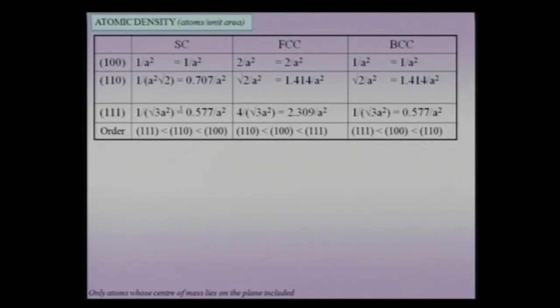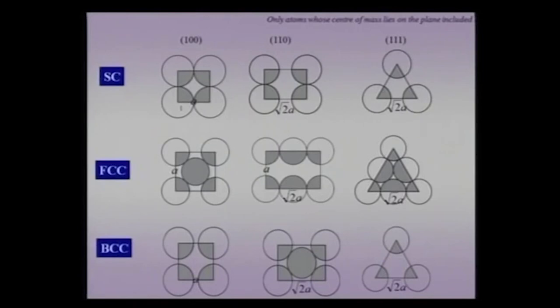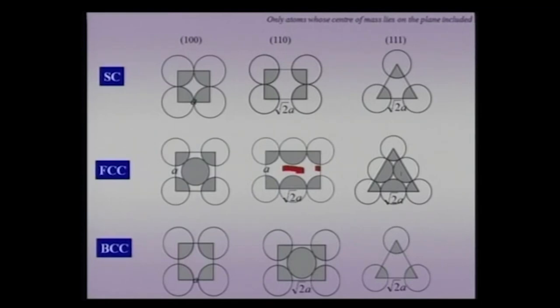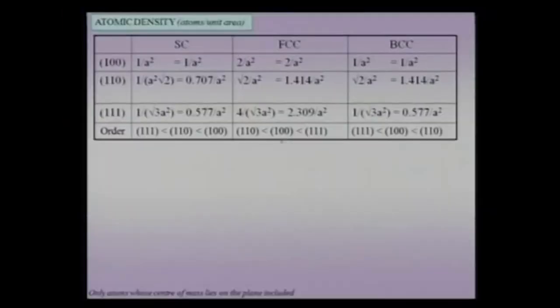For FCC, I can calculate the (100) and (110) planes. The (100) plane in FCC has a central atom plus 4 corner contributions. The (110) plane has lot of open space in the middle, giving lower packing. The (111) plane in FCC has the highest packing density — it is nothing but the hexagonal close-packed layer. It is not surprising that the (111) plane in FCC has the highest packing density.